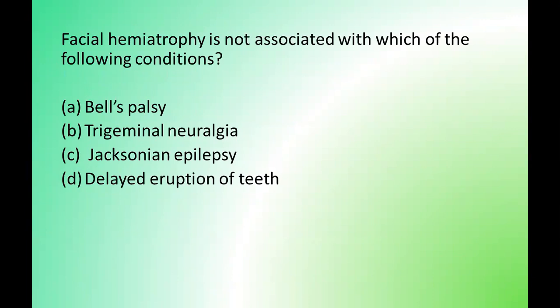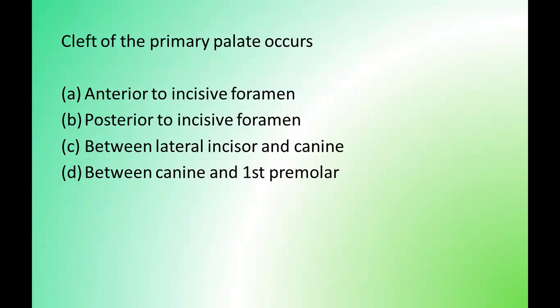Next question: facial hemiatrophy is NOT associated with which of the following conditions? Options are: Bell's palsy, trigeminal neuralgia, Jacksonian epilepsy, delayed eruption of teeth. The correct answer is option A — Bell's palsy. Moving on: cleft of the primary palate occurs where? Options are: anterior to incisive foramen, posterior to incisive foramen, between lateral incisor and canine, between canine and first premolars. The correct answer is anterior to incisive foramen.